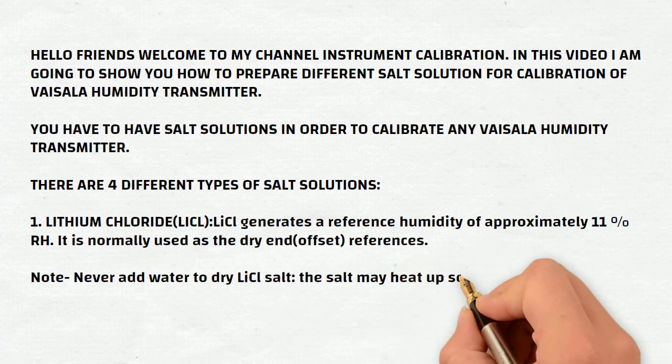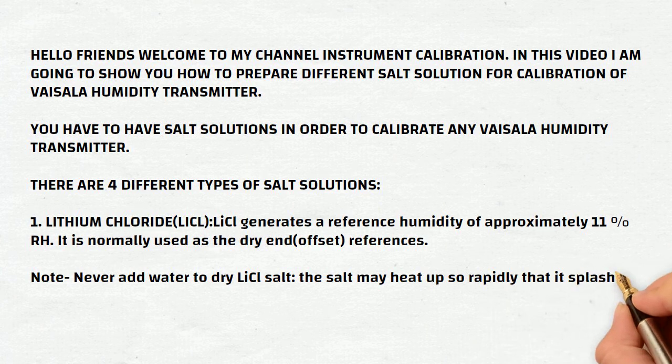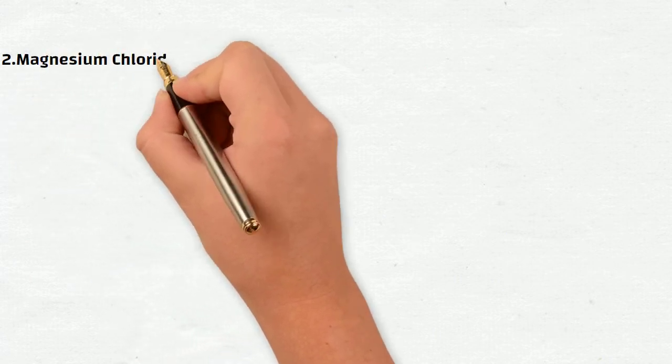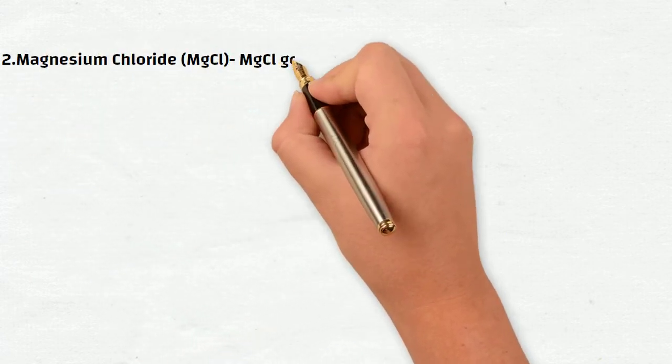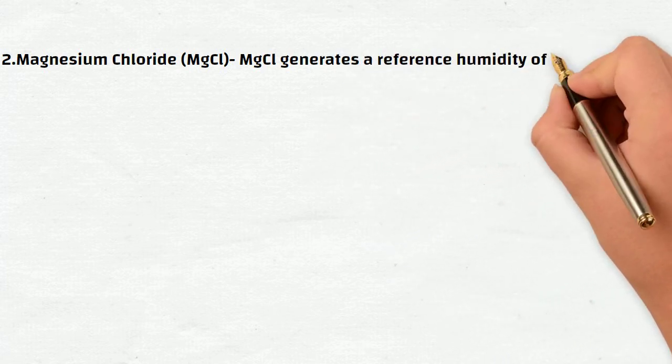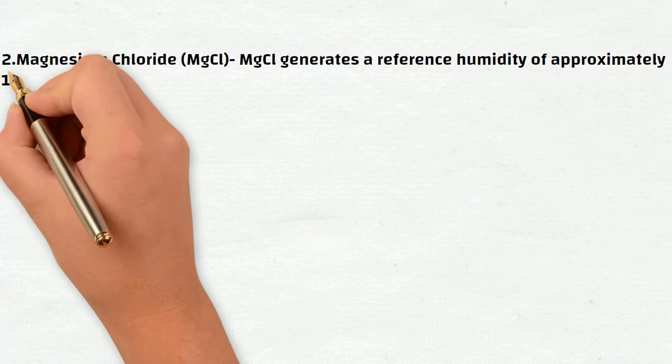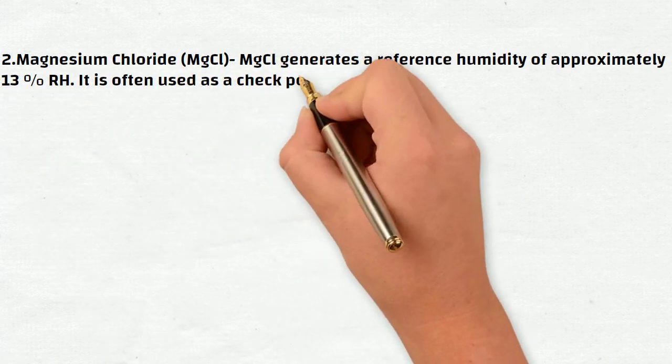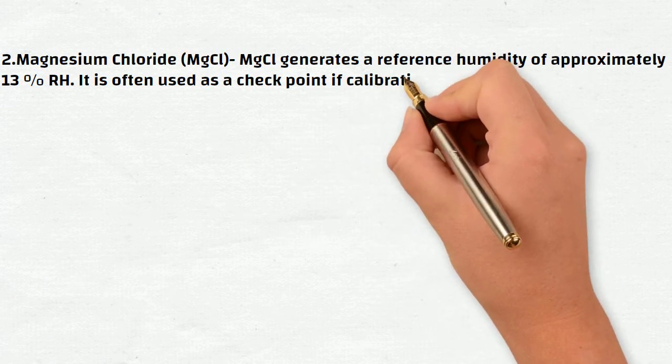Second, magnesium chloride MgCl. MgCl generates a reference humidity of approximately 33% RH. It is often used as a checkpoint if calibration is performed at more than two points.